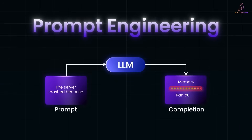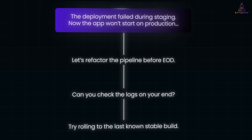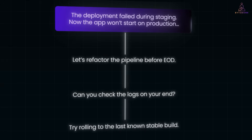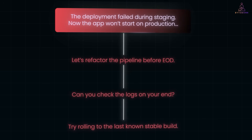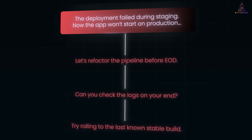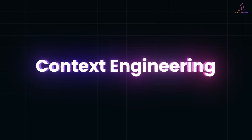A while back, I made a video on prompt engineering. We saw how simply changing the way you frame a prompt can completely shift the response you get from an AI model. And that's true — prompts are the entry point. But as AI projects move beyond demos, prompt engineering alone isn't enough. What really makes or breaks an AI system in production is context engineering.